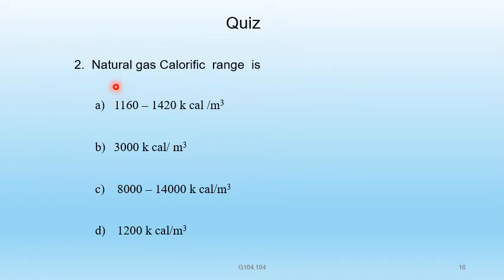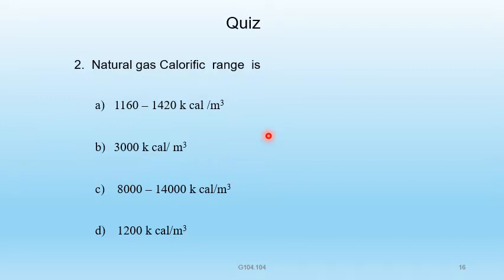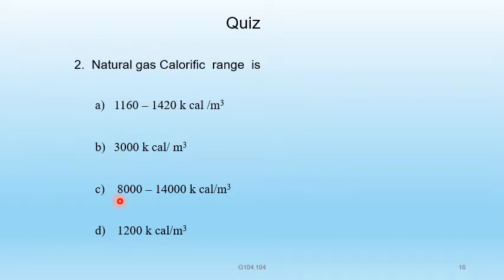Question 2 — Natural gas calorific value ranges: A) 1160 to 1420 kcal/m³, B) 3000 kcal/m³, C) 8000 to 14000 kcal/m³, D) 1200 kcal/m³. The correct answer is C: 8000 to 14000 kilocalories per meter cube.